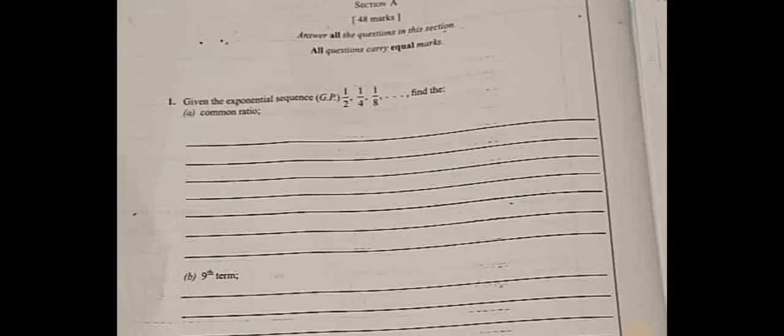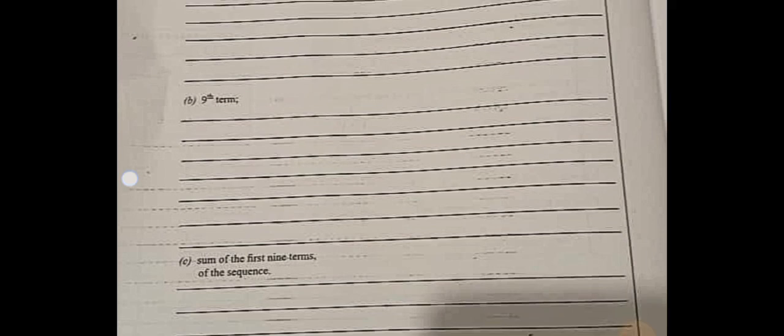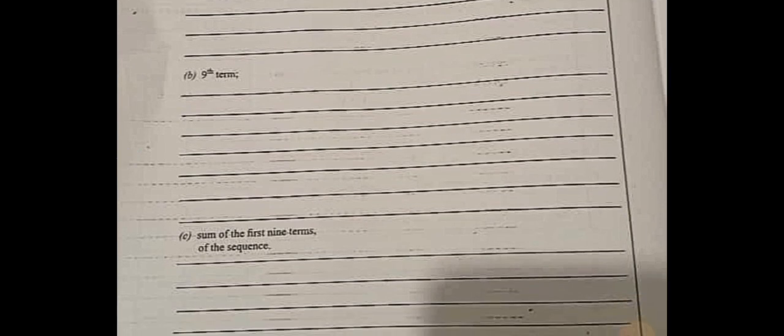Given the exponential sequence 1 over 2, 1 over 4, 1 over 8, find the common ratio, the 9th term, then the sum of the first 9 terms of the sequence.